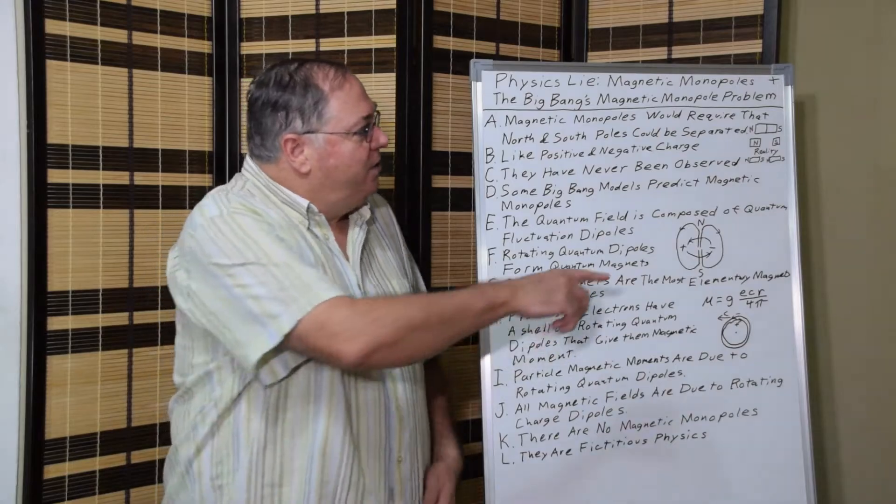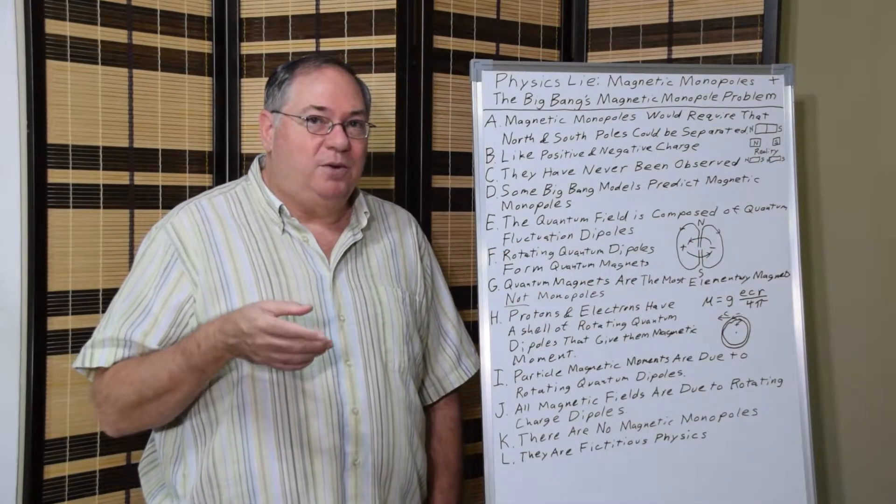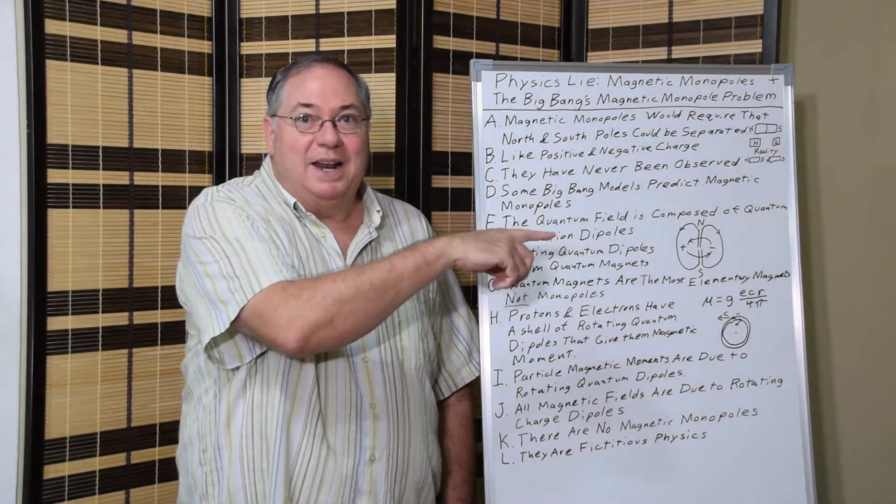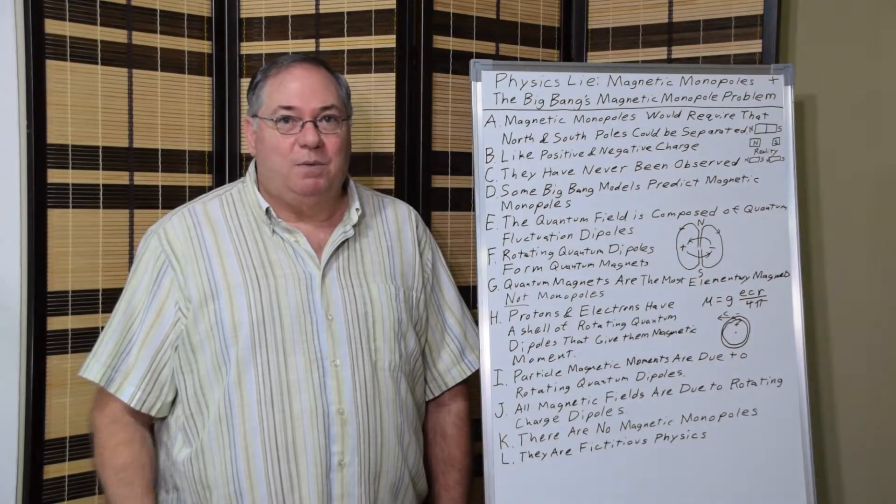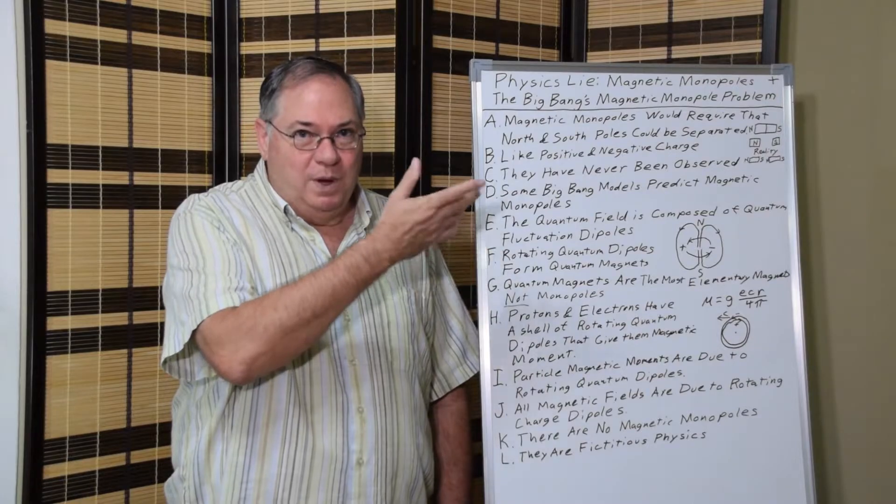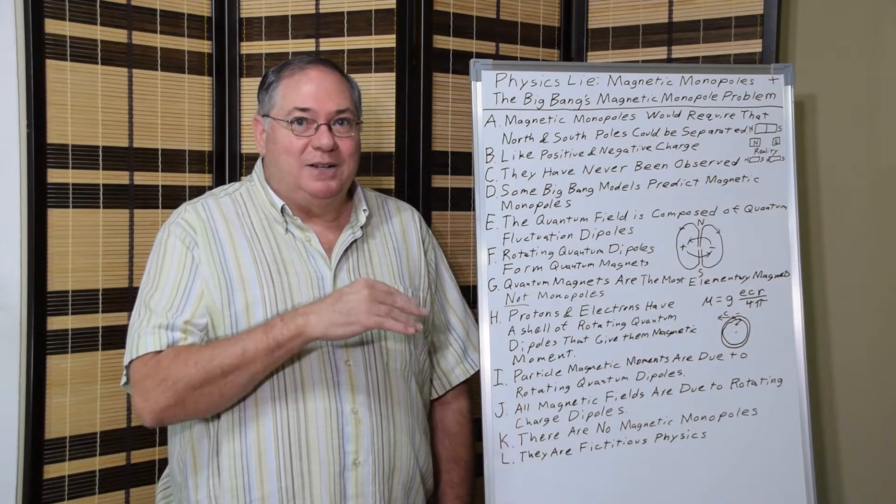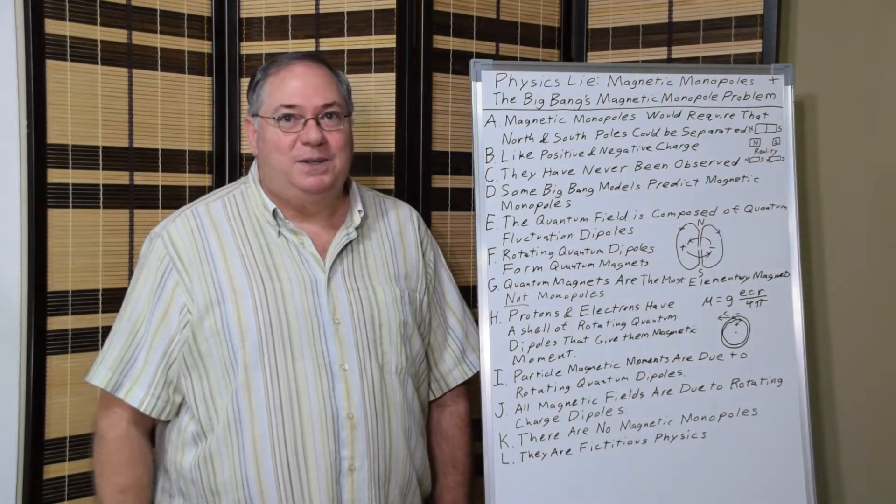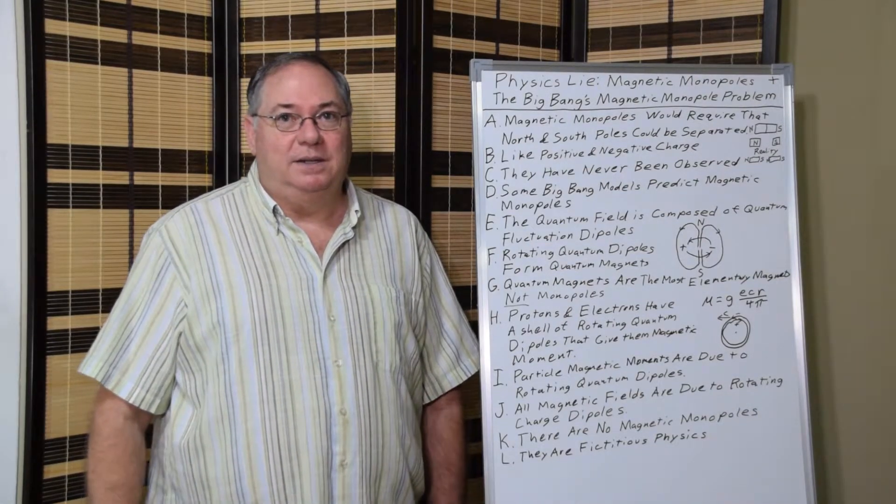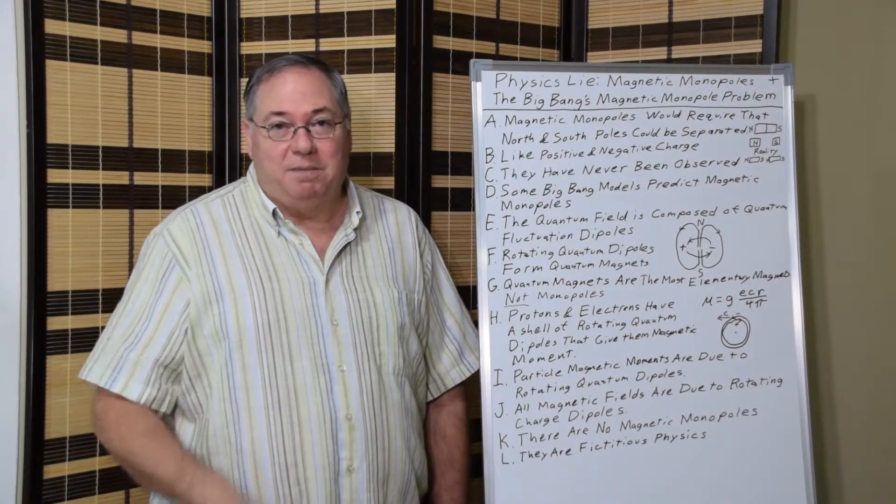And then, you have a situation where even a single rotating dipole creates a quantum magnet. And the quantum magnet has magnetic fields around it, which are made by other quantum magnets that are aligning with the magnetic field. And those quantum magnets are made of rotating quantum dipoles. And that continues all the way down because the quantum fluctuations can be as small as they can possibly be.